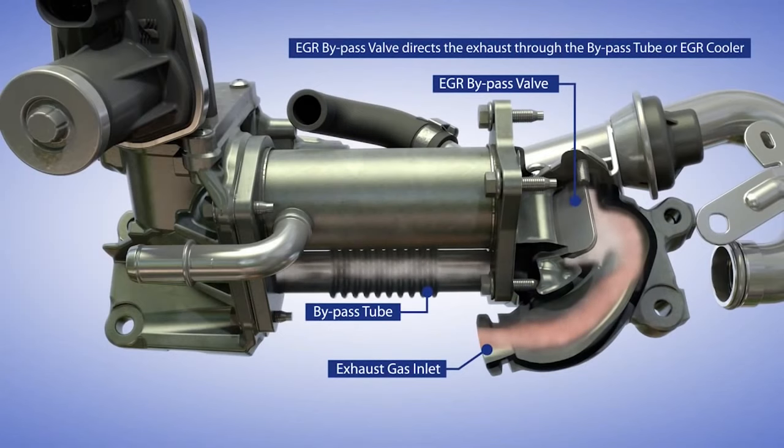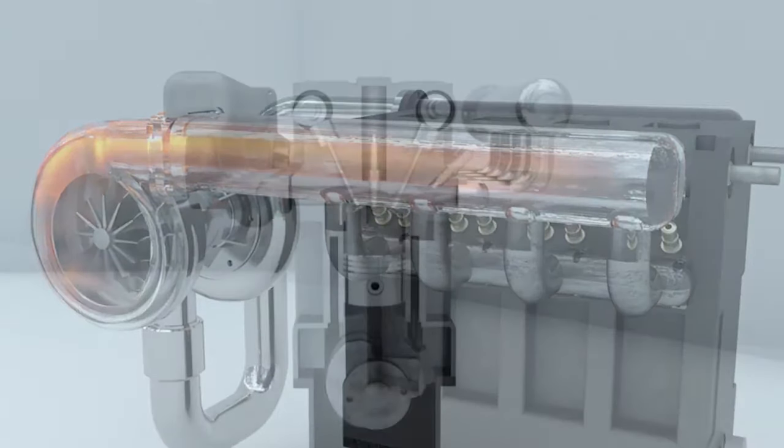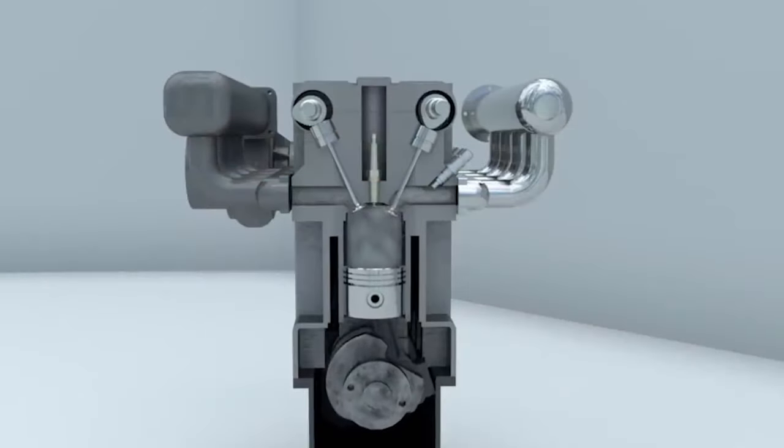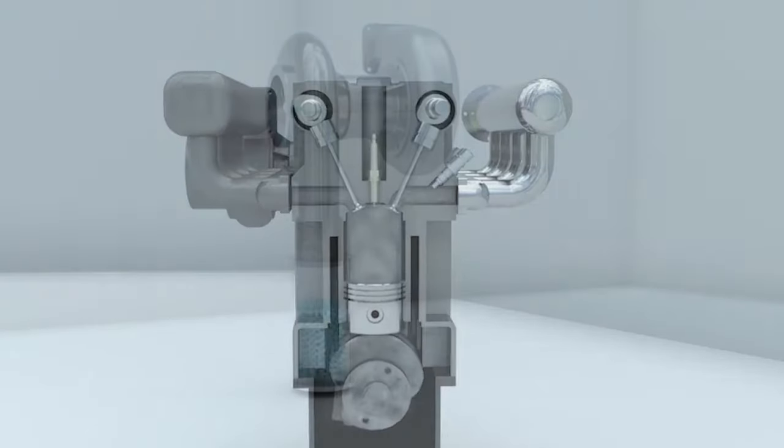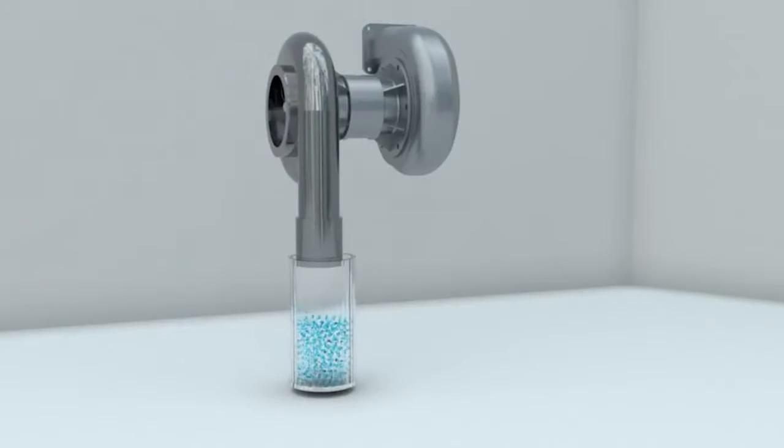Exhaust gas recirculation valves for gasoline engines function similarly to their diesel equivalents in high-pressure engines. A vacuum is created when the cylinder is depressed, and this vacuum acts as a suction to suck in exhaust gases. The flow of these gases can be adjusted by opening and shutting the EGR valve.